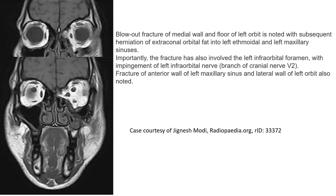The last case is an MRI image of orbital fracture, where we can see the blowout fracture of the medial wall and floor of the left orbit with subsequent herniation of extraorbital fat into the left ethmoid and left maxillary sinus.